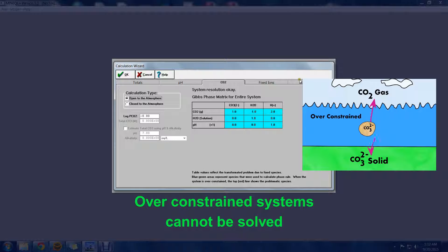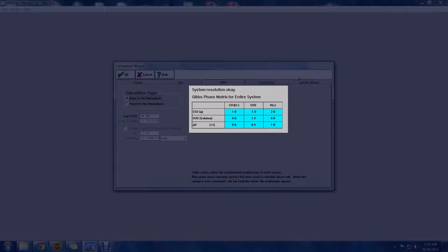Systems that are over-constrained are incapable of producing a solution to your calculations. To avoid this, the Gibbs phase matrix provides a guide to help you know when your system is in trouble.